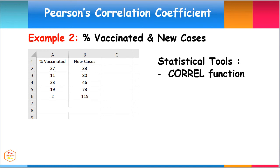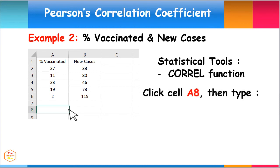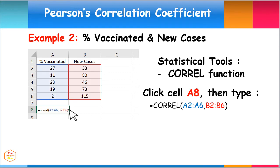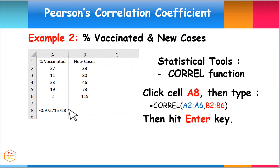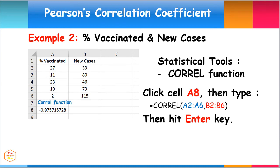Let's first use the built-in CORREL function to analyze our data. Click cell A8, then type equal sign, CORREL, parenthesis, A2, A6, comma, B2, B6, close parenthesis. Then hit Enter. From the given data, using the CORREL function of Excel, we got a correlation coefficient of negative 0.975715728.